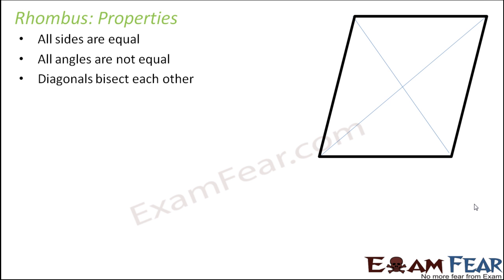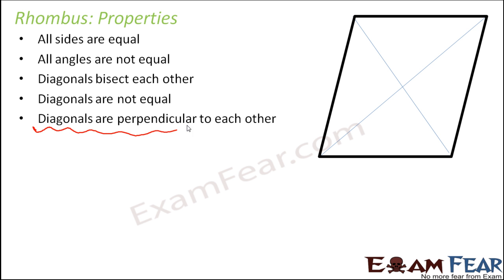Diagonals bisect each other in this case, like the same property as parallelogram, but the diagonals here are not equal. However, the diagonals are perpendicular bisectors of each other.